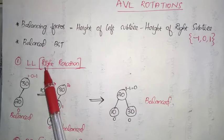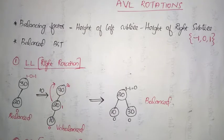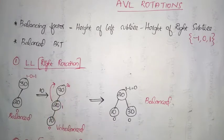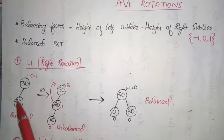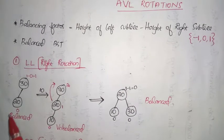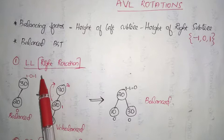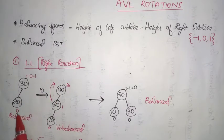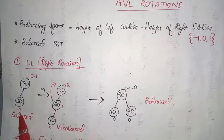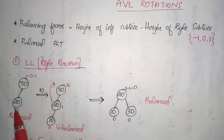The first rotation is the Left-Left (LL) rotation. Suppose we have a tree like this where the root node is 30 and it has a left child 20. To find the balancing factor of each node, we have to keep in mind that the balancing factor of a leaf node will always be zero — no extra calculation needed.